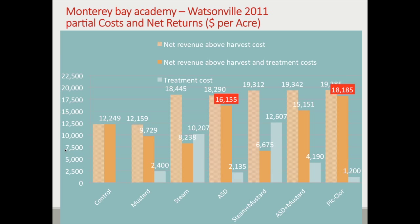Looking at net returns for the Watsonville trial — again the main difference is in the cost of ASD, around $2,100 versus $1,200 for Pic-Clor. The yield was slightly but not statistically significantly lower, reflecting about a $2,000 difference in returns above harvest and treatment cost.